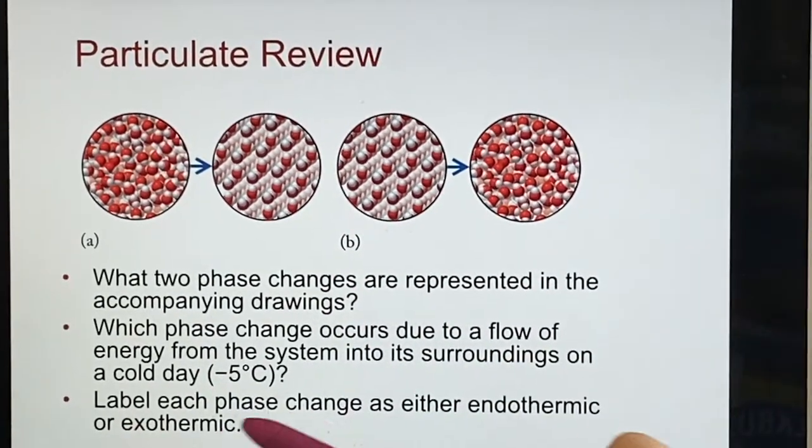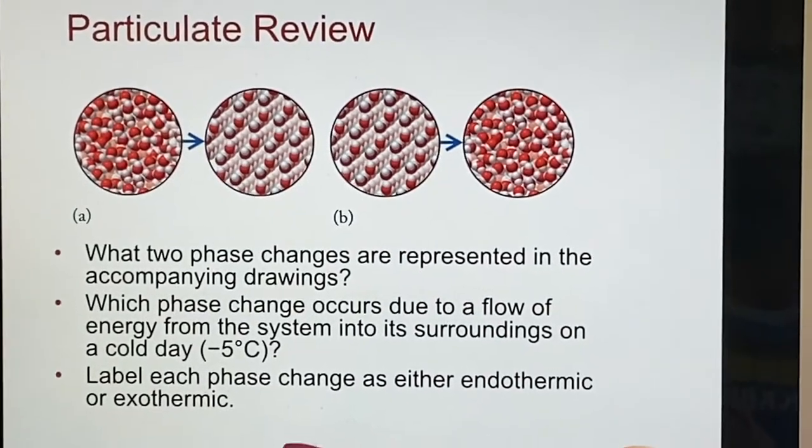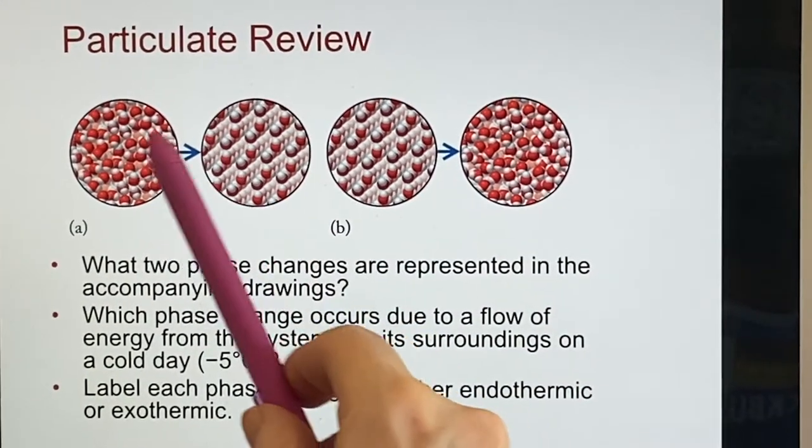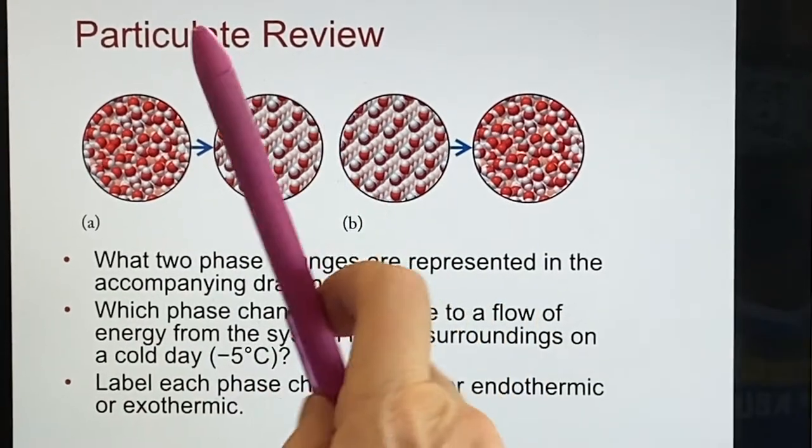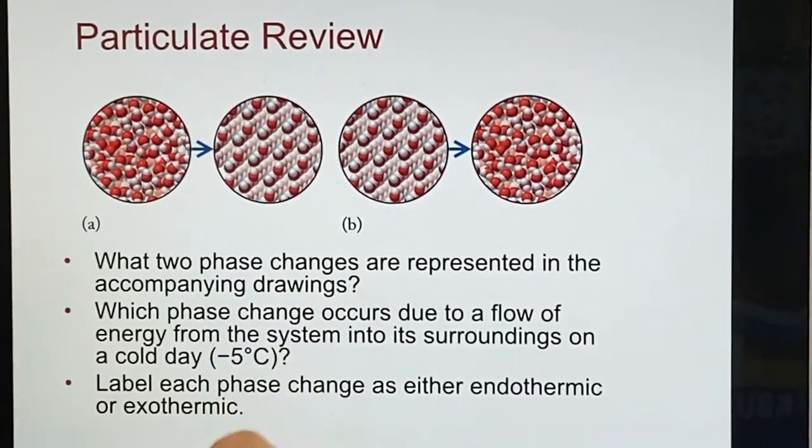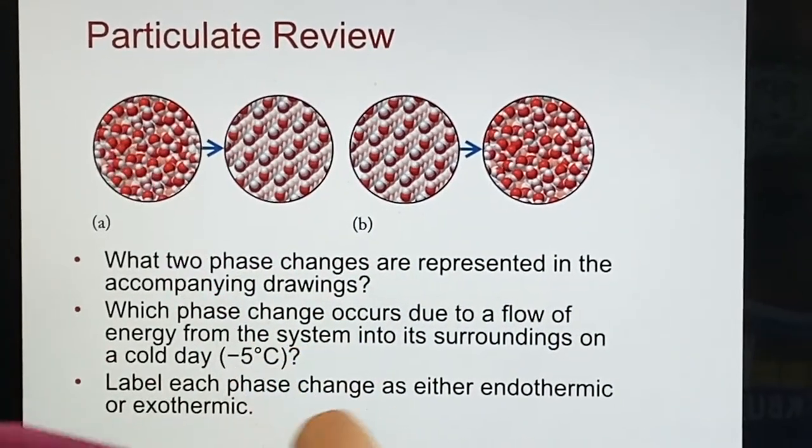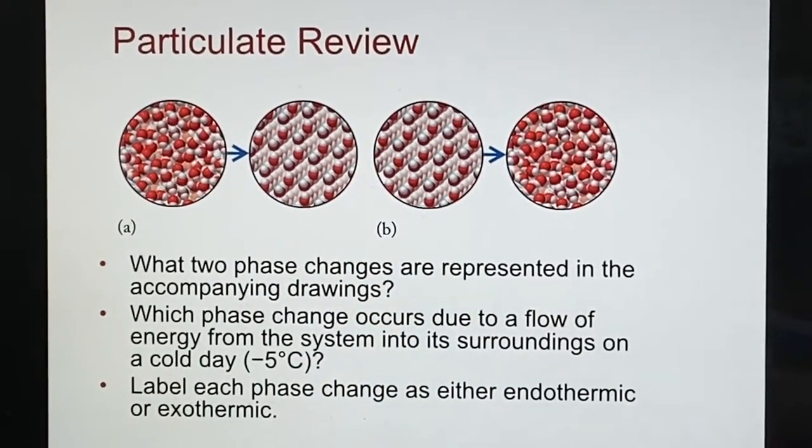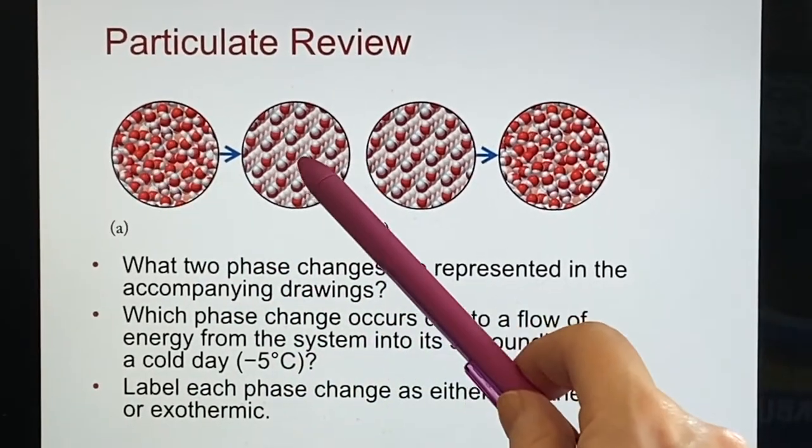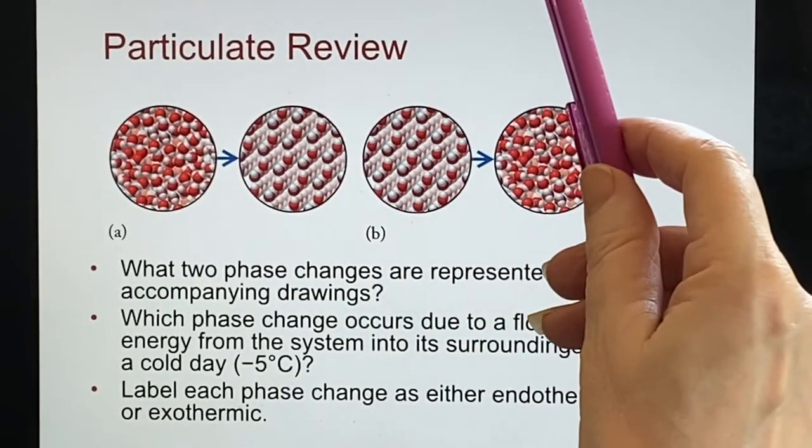So when we look at these and we try to label them, we don't think about, oh, this is colder than that. We should be thinking about this is motionless compared to that, that this had more energy and it must have lost it. So this process is exothermic. It's giving up heat.